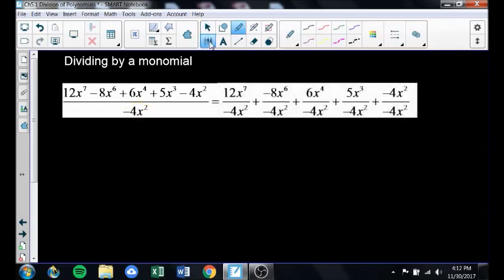You can think of this as being a bunch of separate fractions. I split this up into a whole bunch of different little fractions, and then I just divide all the fractions. So 12x to the seventh divided by negative 4x squared becomes negative 3x to the fifth. The powers subtract. Negative 8x to the sixth minus 4x squared becomes positive 2x to the fourth. They cancel each other but they don't go away, they just divide to 1.